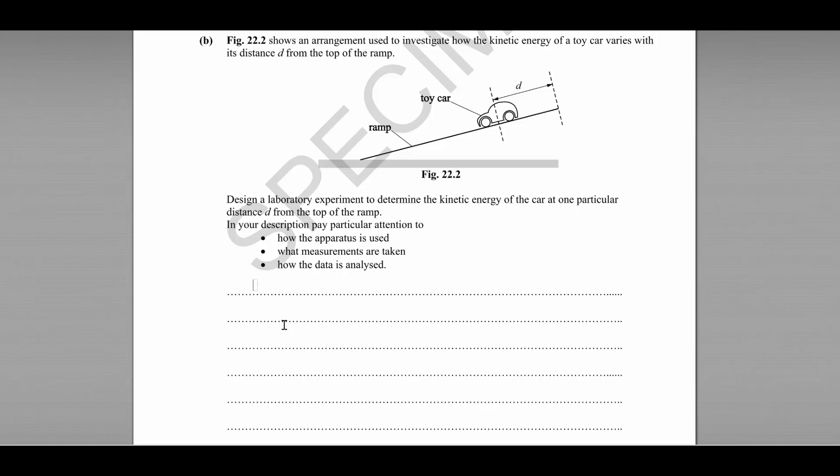So there are a few different ways you could do this. Personally, I would use a light gate. So light gate and data logger are used to measure the time taken for the car to pass.